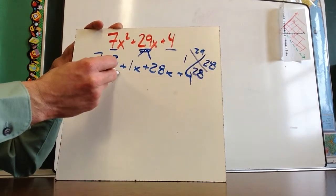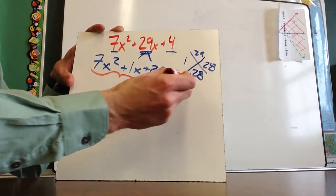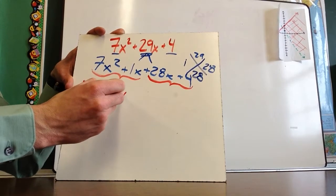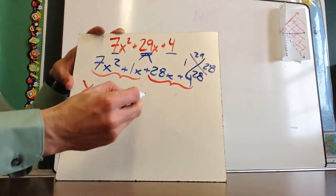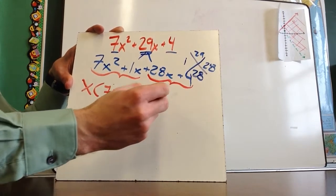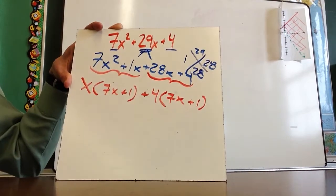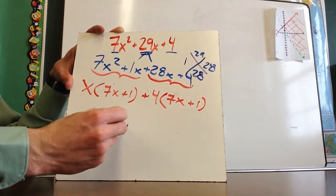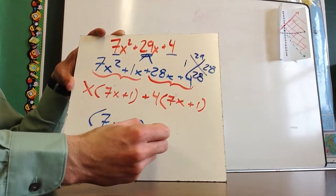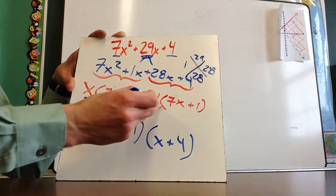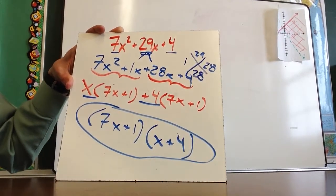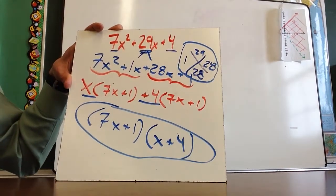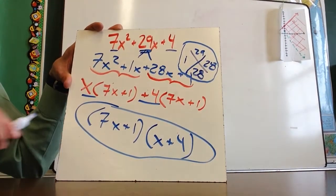Now I'm going to figure out what these two have in common and what these two have in common, similar to what we did a couple of lessons ago. These first two have an x in common, so I can factor out an x and I'll be left with 7x plus 1. Whereas these two have a 4 in common, so when I divide out a 4, I am left with 7x plus 1. Now I see that these share 7x plus 1 in common, and what's left over is x plus 4. So my final factoring is 7x plus 1 times x plus 4. Keep in mind that the X trick was useful to get me here, but not all the way to the final answer.